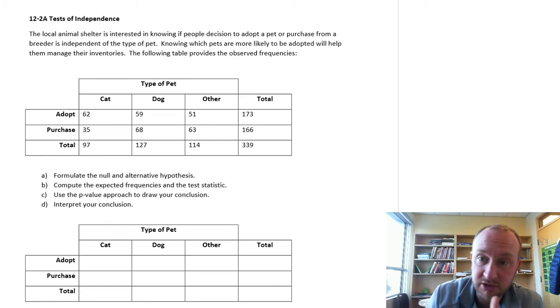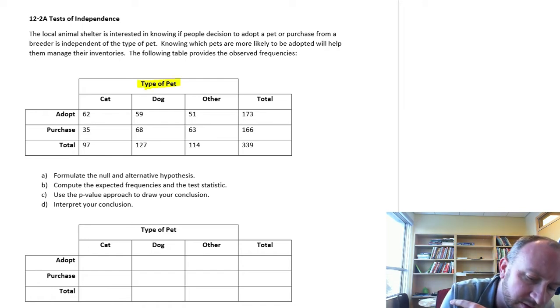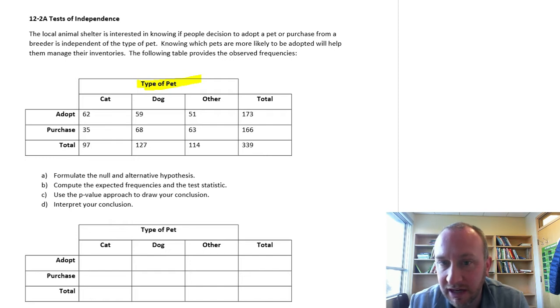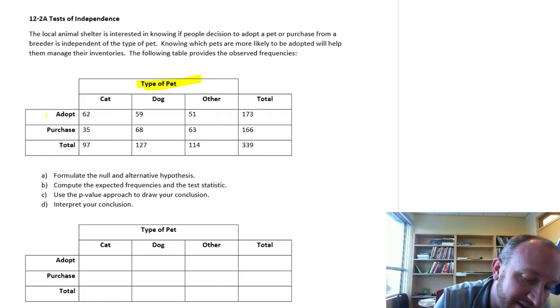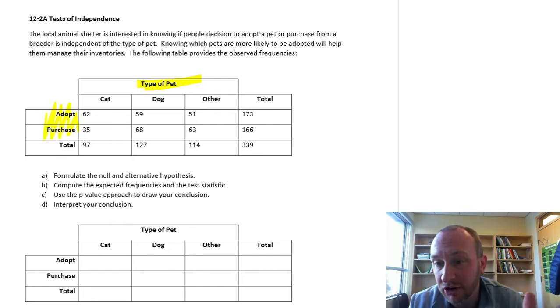Here we have our two variables. We have the type of pet, there's our one variable with the type of animal, and we have this decision of whether or not to adopt or purchase. So we have our two variables.